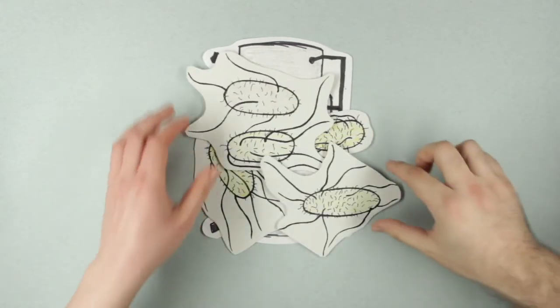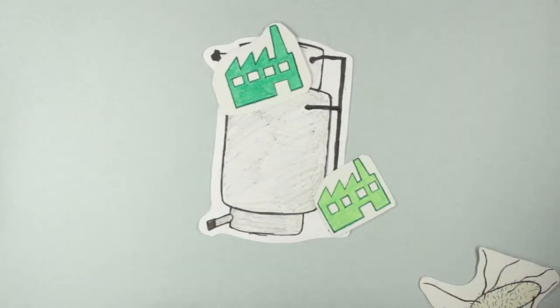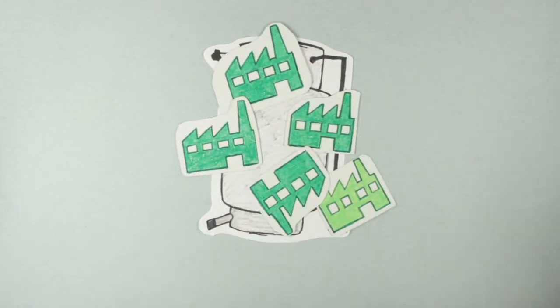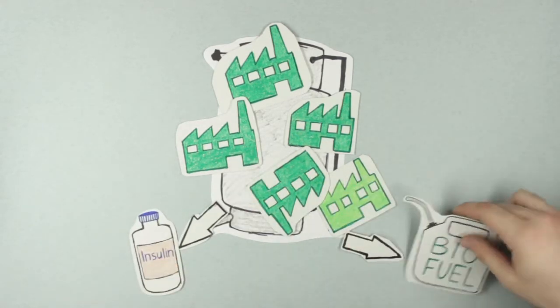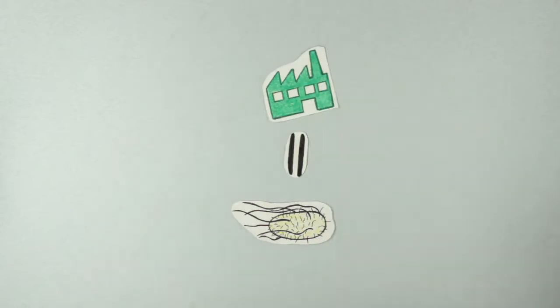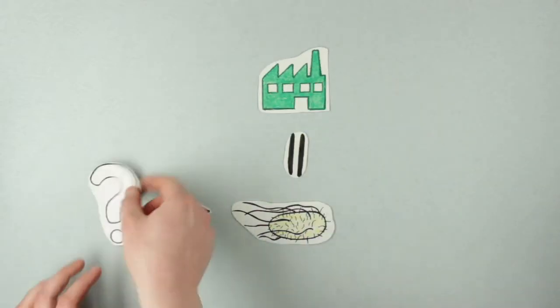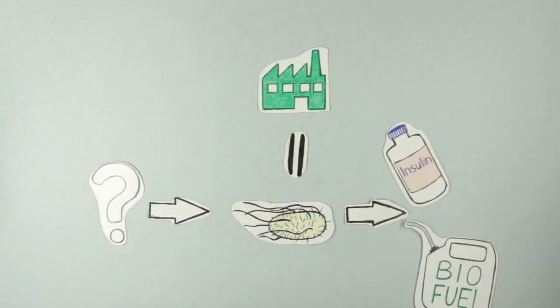The cool thing is, we can use them like tiny chemical factories and tell them via genetic engineering to produce all kinds of useful compounds. But what kind of food shall we give our tiny factories so that they can produce whatever we want?